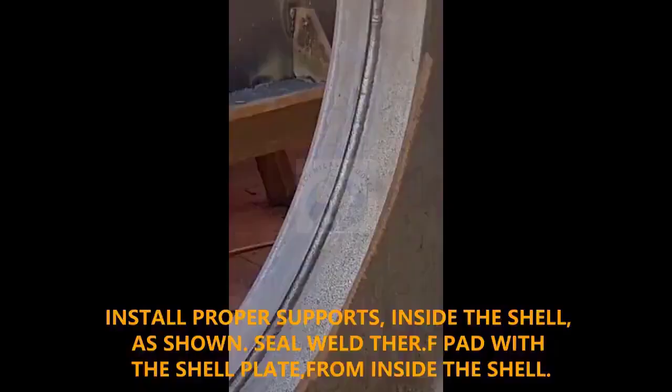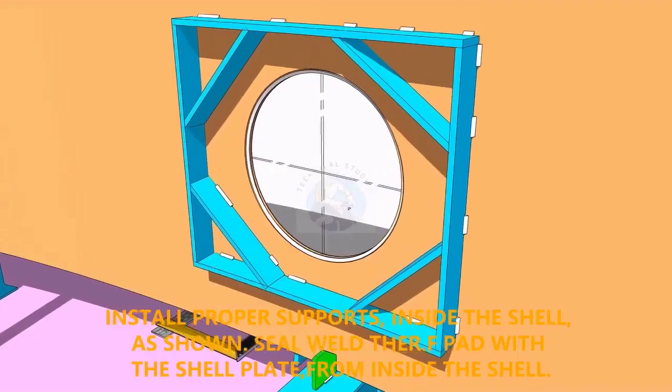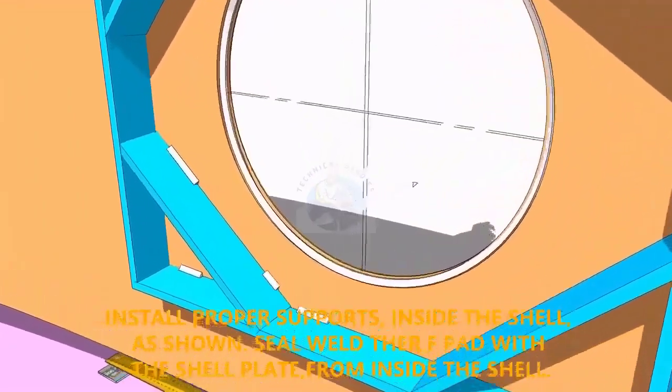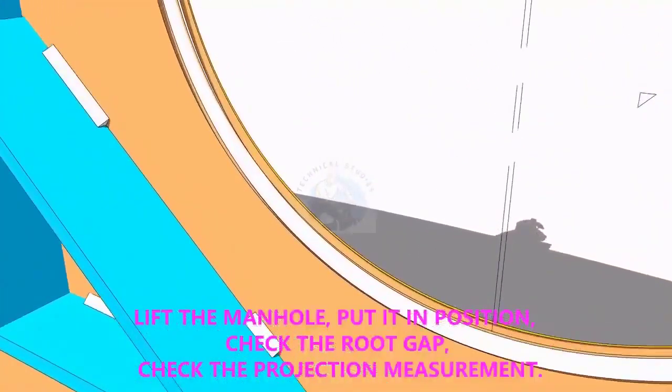Provide proper supports to control the distortion during welding. Weld a run on the joint between the shell plate and the pad plate.